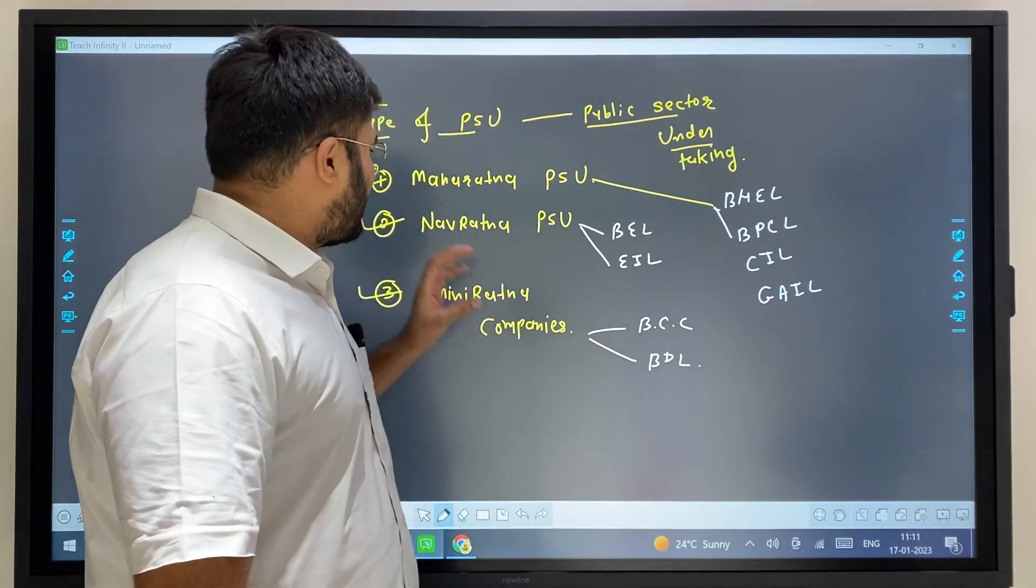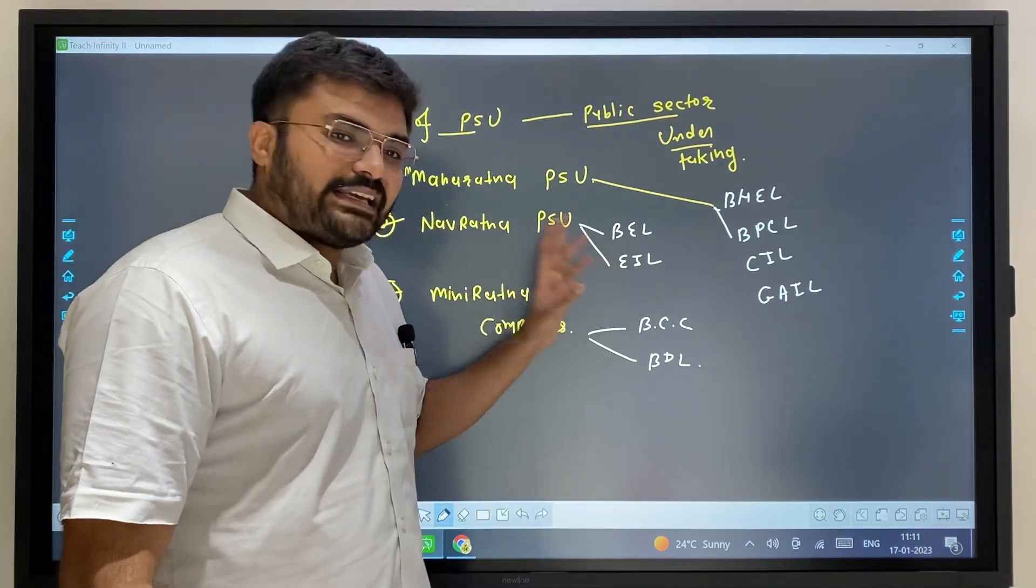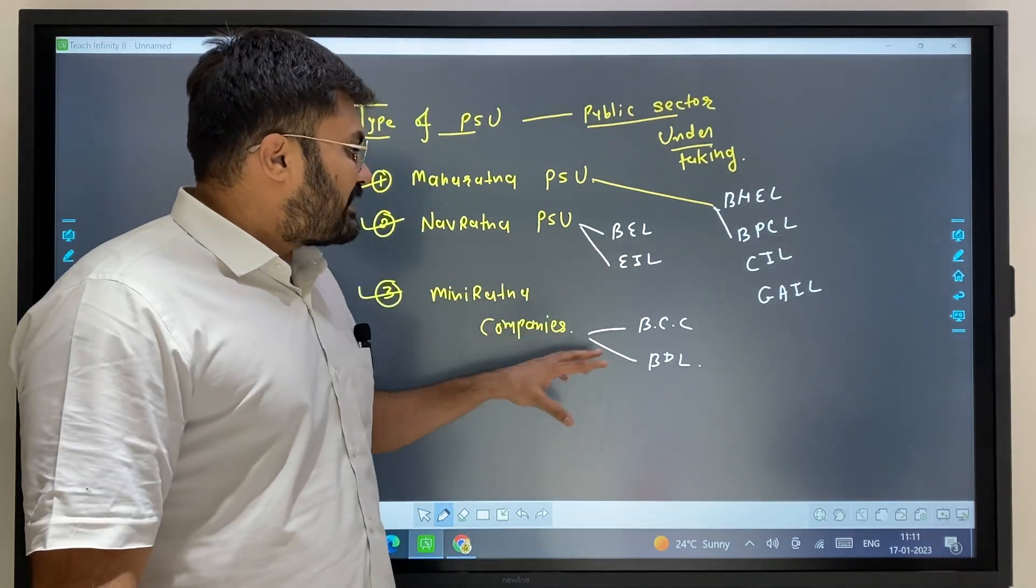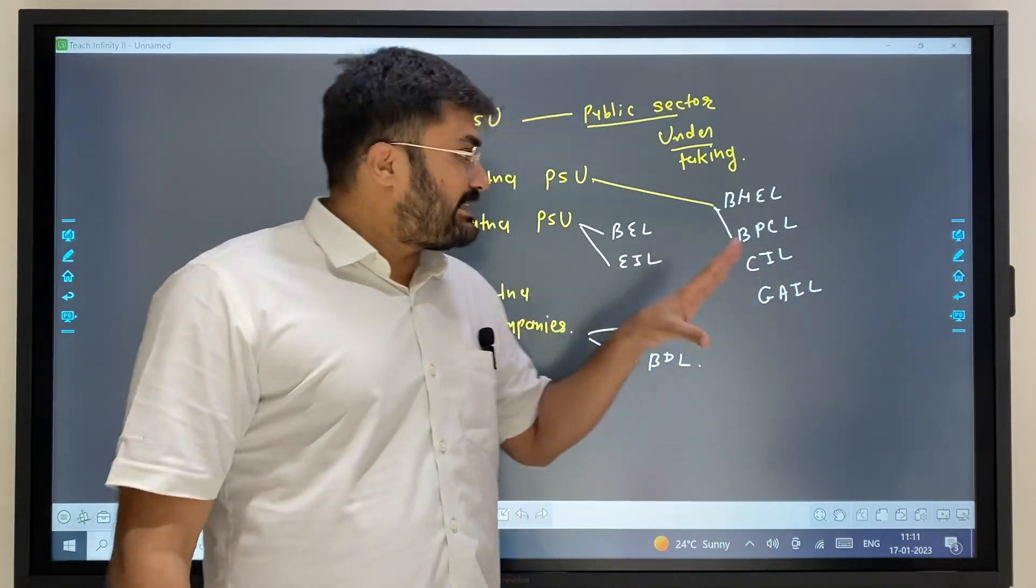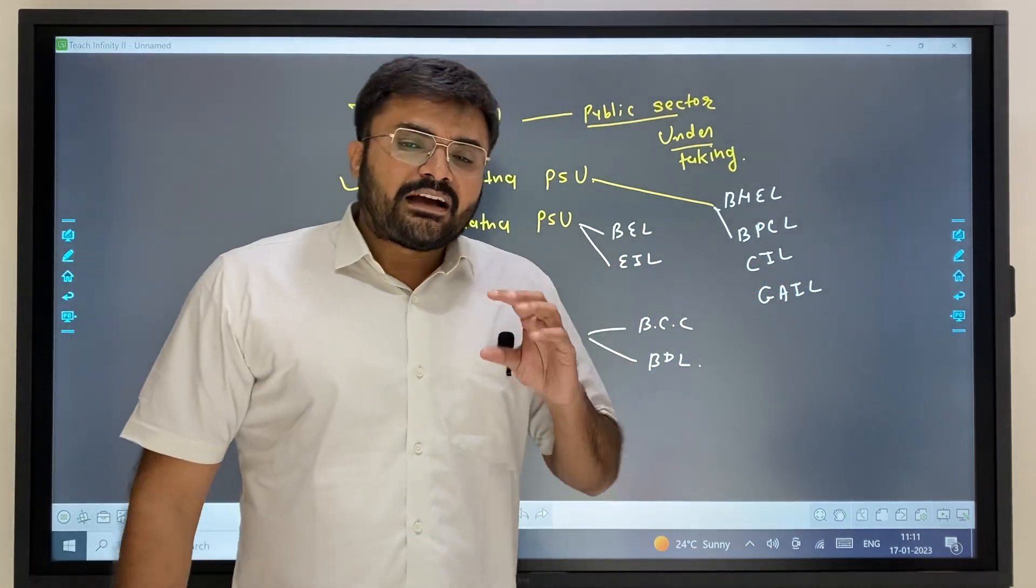In the Maharatna category, there are companies like BEL and EIL. Miniratna companies include BCC and BDL. There are many more PSU companies across these categories.